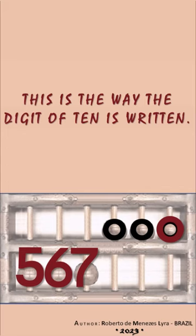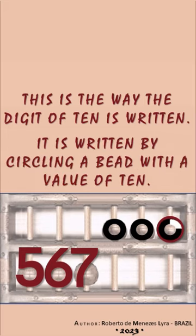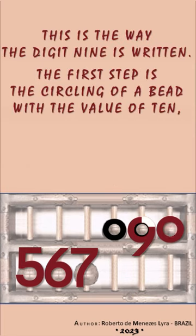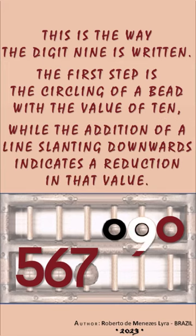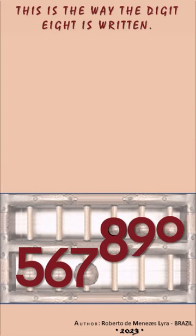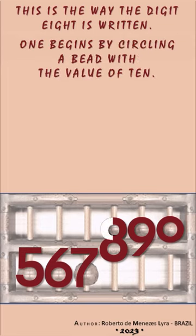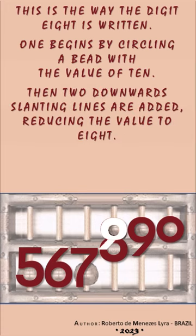This is the way the digit 10 is written. It is written by circling a bead with a value of 10. This is the way the digit 9 is written. The first step is the circling of a bead with the value of 10, while the addition of a line slanting downwards indicates a reduction in that value. This is the way the digit 8 is written. It begins by circling a bead with the value of 10. Then two downward slanting lines are added, reducing the value to 8.